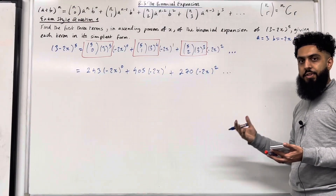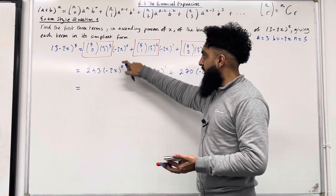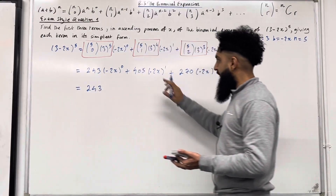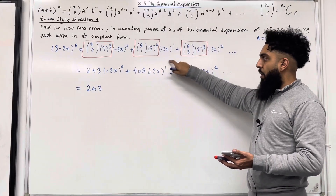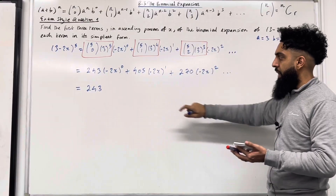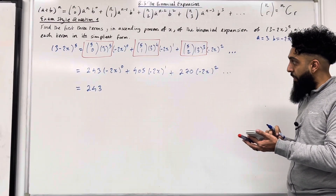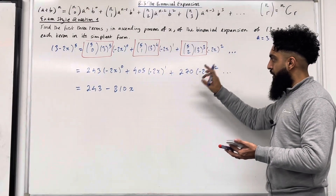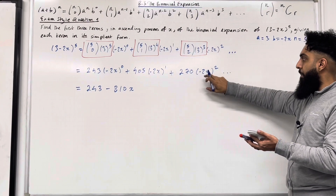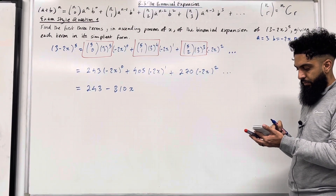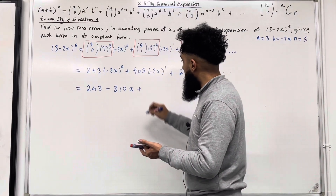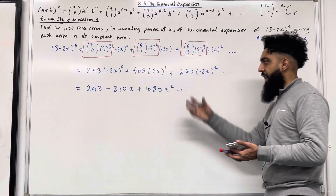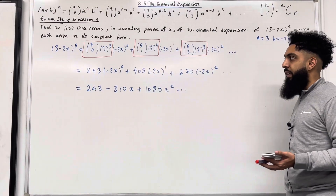Now I'm going to simplify each term. First term: (minus 2x) to the power 0 is just 1, so 243 times 1 is just 243. Second term: minus 2 to the power 1 is minus 2, x to the power 1 is just x, so 405 multiplied by minus 2 gives minus 810x. Third term: 270 multiplied by (minus 2) to the power 2 gives 1080, so positive 1080x squared. That completes the question — we have the first three terms in ascending powers of x of the binomial expansion.